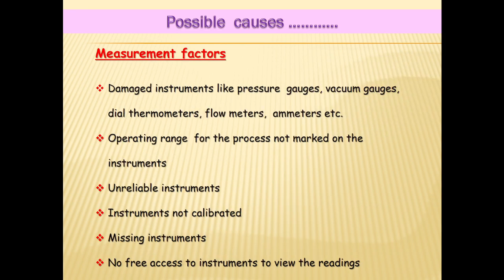What are the possible causes due to the Measurement factor? Damaged instruments like pressure gauges, vacuum gauges, dial thermometers, flow meters, and emitters. The operative range for the process is not marked on the instruments, unreliable instruments, instruments not calibrated, missing instruments, and no free access to instruments to view the readings.